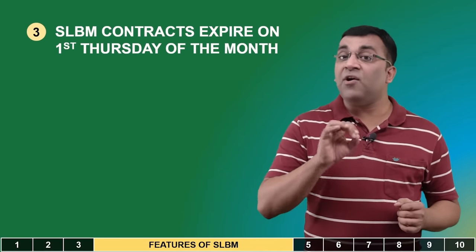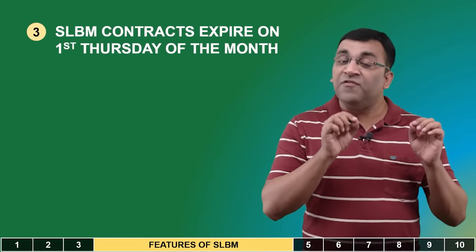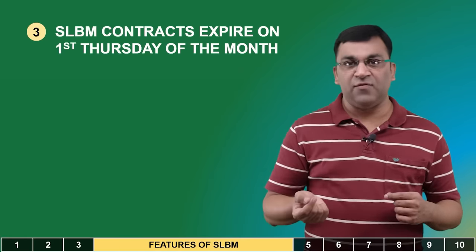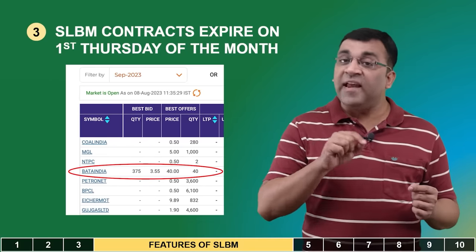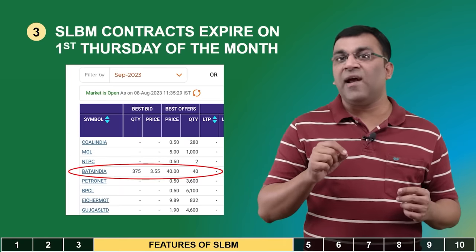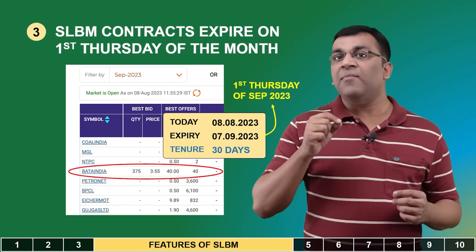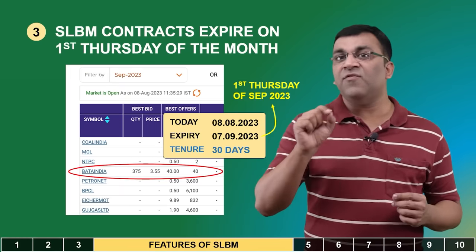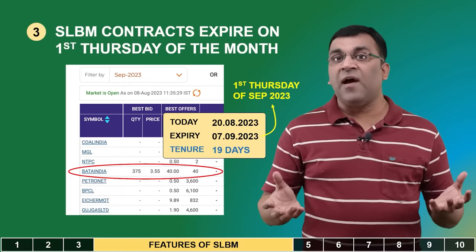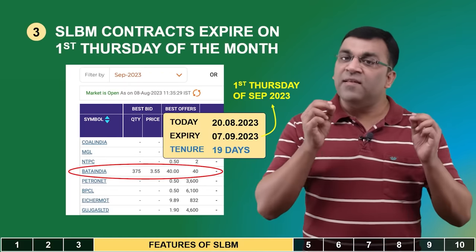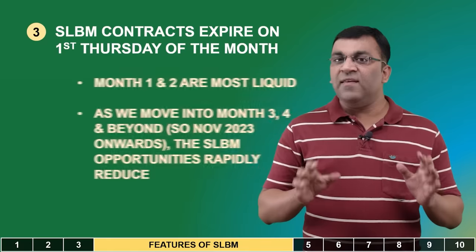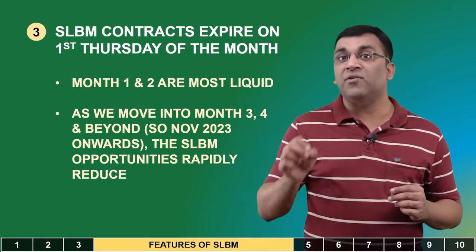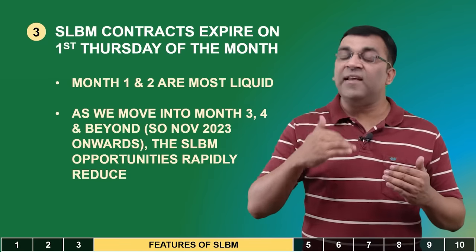A third feature relates to the expiry of an SLBM contract, which happens on the first Thursday of every month — unlike an F&O contract whose expiry happens on the last Thursday. For example, recording on 8th August and selecting the September 2023 contract for Bata India means lending from 8th August until the first Thursday of September, the 7th of September, giving a 30-day tenure. However, doing the same transaction on the 20th of August would yield only a 19-day tenure. Highest liquidity is available in the most recent one or two month contracts, with volumes falling rapidly at months 10, 11, and 12.